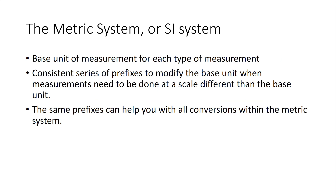We're going to see that this is different in the metric system, or the SI system. In the metric system, there is a base unit of measurement for each type of measurement you're going to make, but there is also a consistent series of prefixes that can be used to modify that base unit when measurements need to be done at a different scale. The same prefixes can help you with all conversions within the metric system.